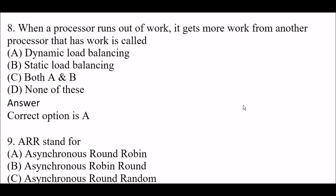Next question: When a processor runs out of work, it gets more work from another processor. This state of work is called — Option A: Dynamic load balancing. Option B: Static load balancing. Option C: Both A and B. Option D: None of these. The right answer is Option A — dynamic load balancing.